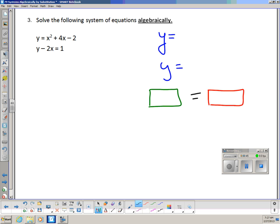We're going to take the equations that we see and solve them for y. Well, the first one we see, y equals x squared plus 4x minus 2, is already solved for y. So that part is done for us. But now we have y minus 2x equals 1. And we're going to solve that for y. So we're going to add 2x on both sides, and we're going to get y equals 2x plus 1.